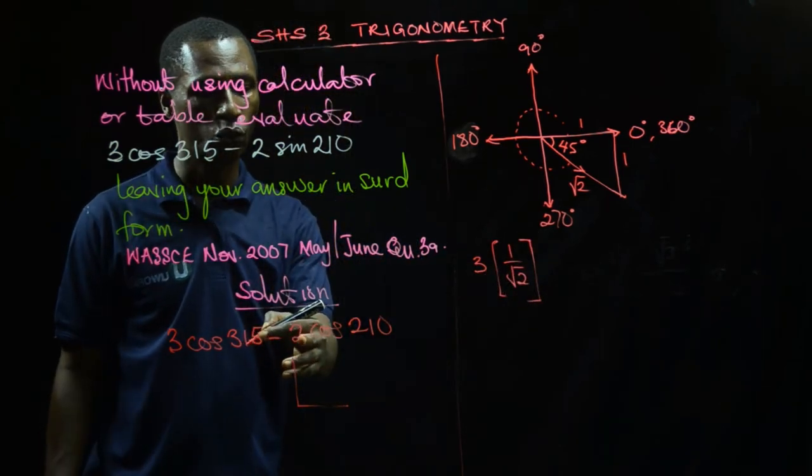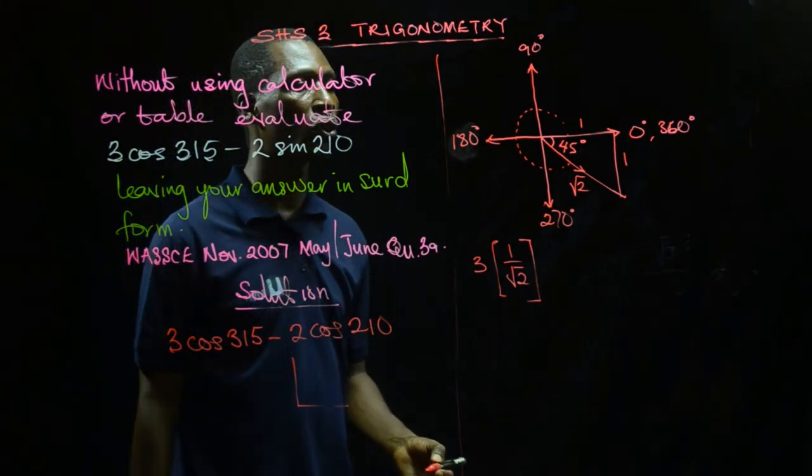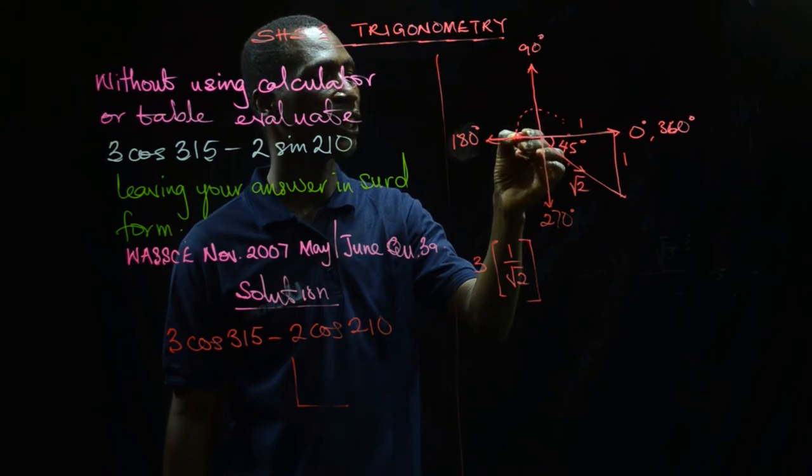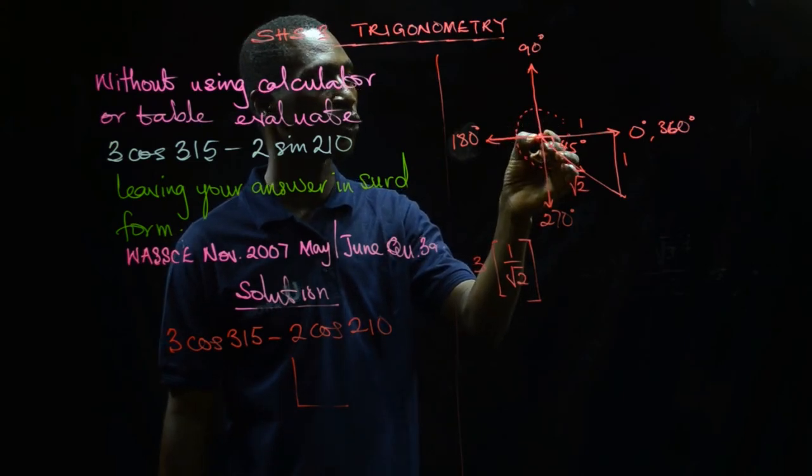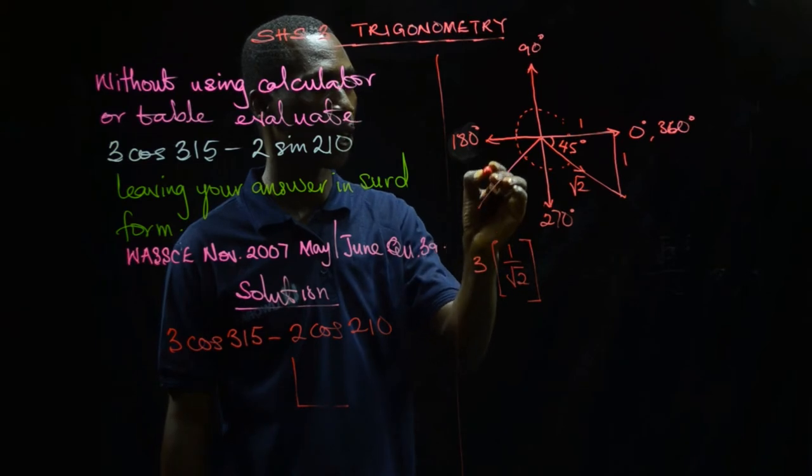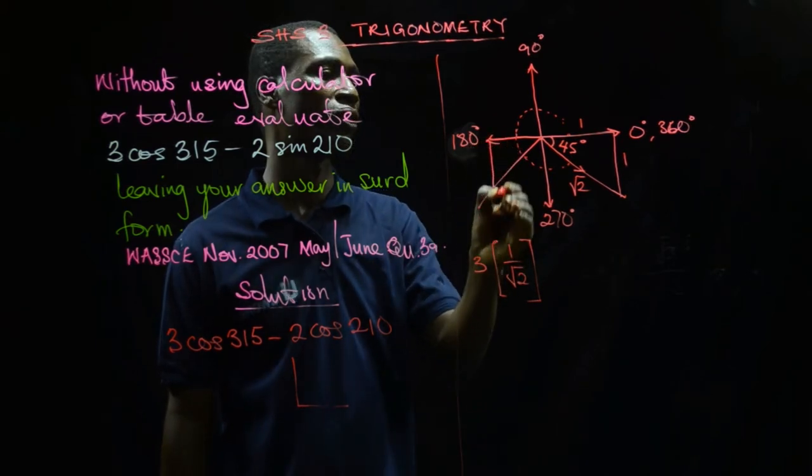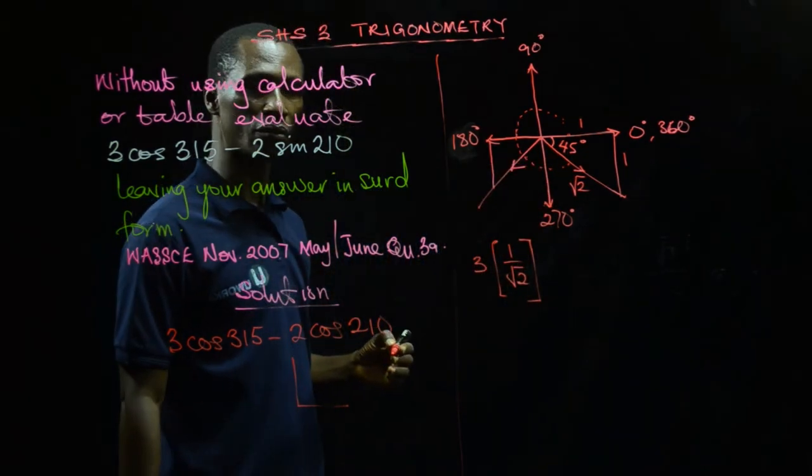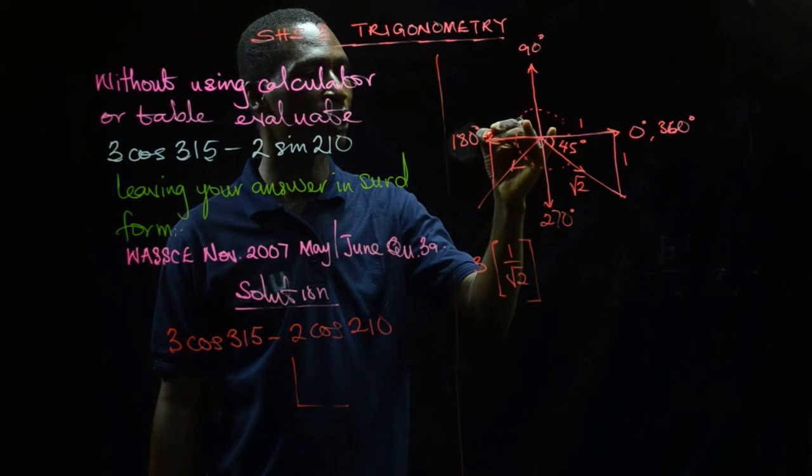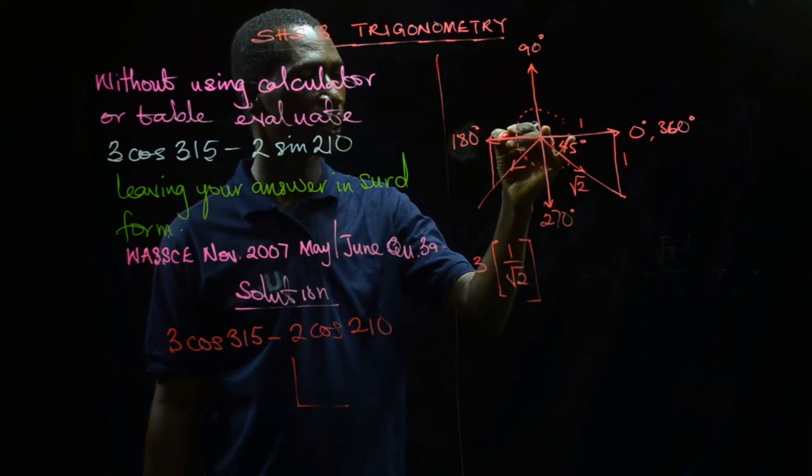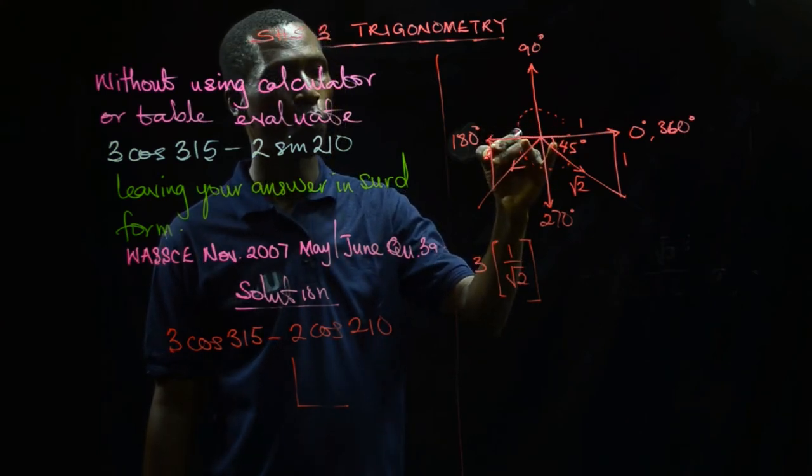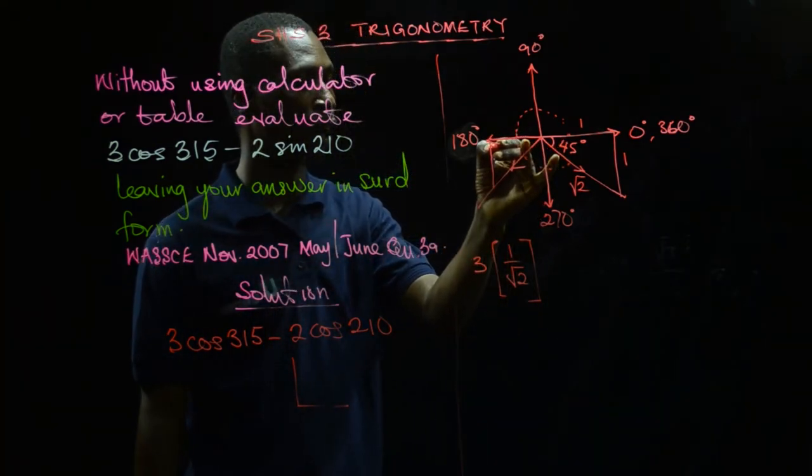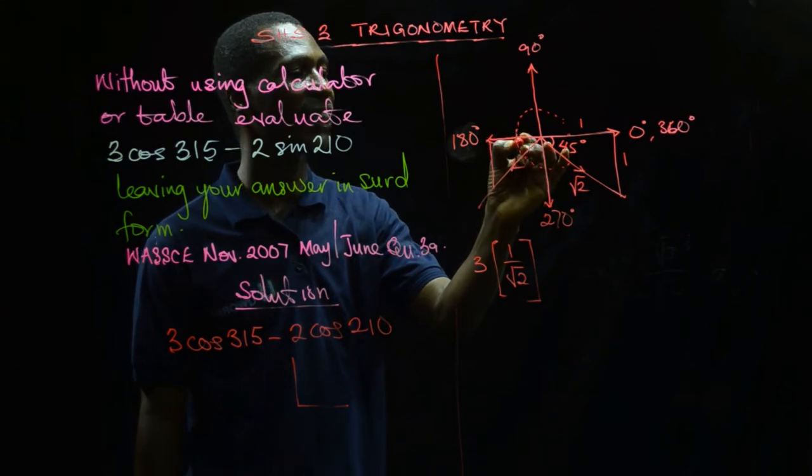In this quadrant cosine is positive. Now minus 2sin(210°). If this place is 180, what will we add to 180 to get 210? That direction will come this way. If I've gotten 180 here, I add 30 degrees to get 210, so here is 30 degrees.